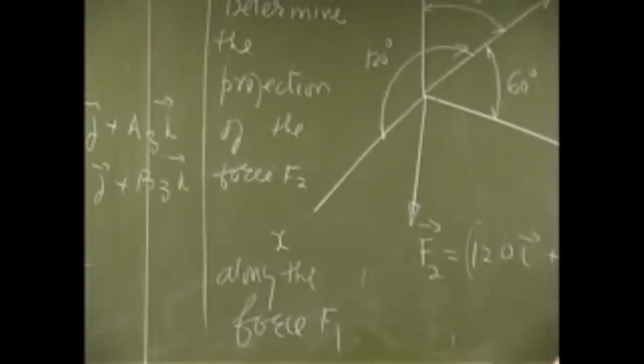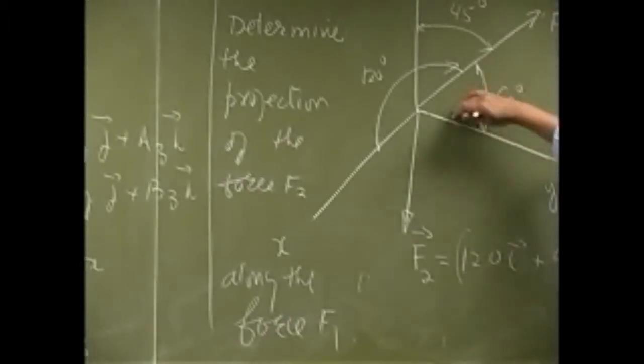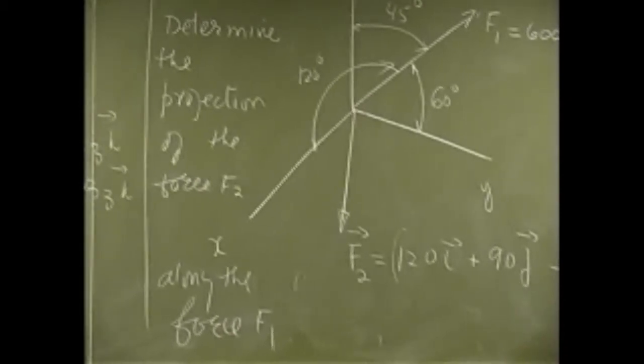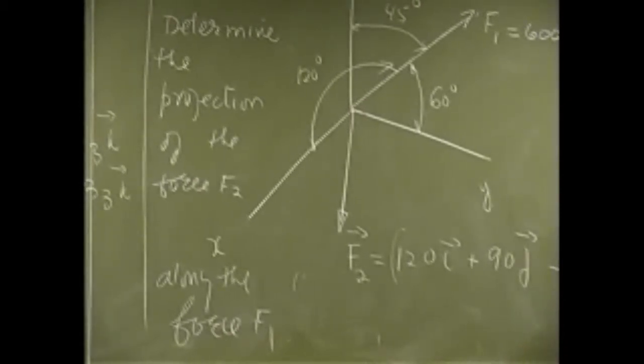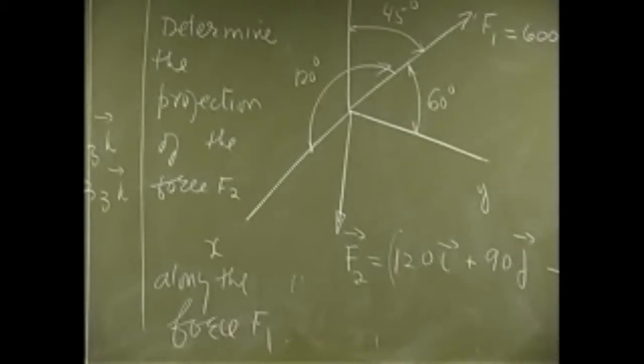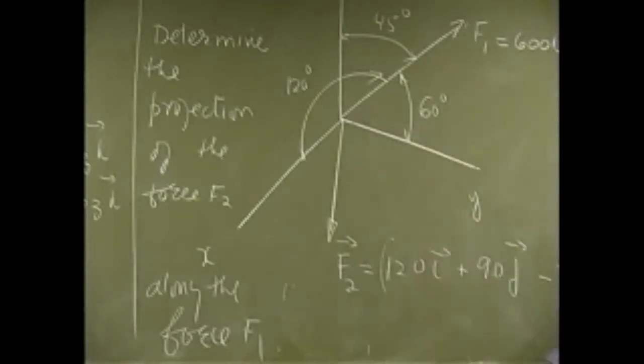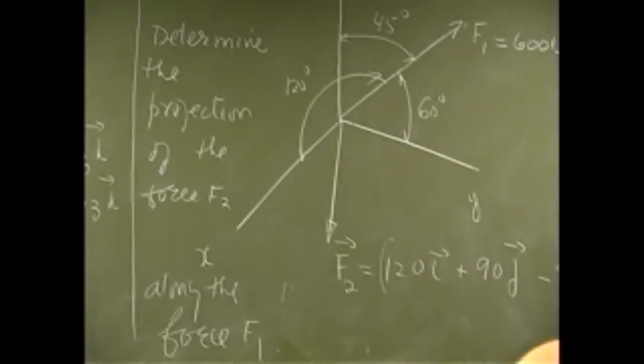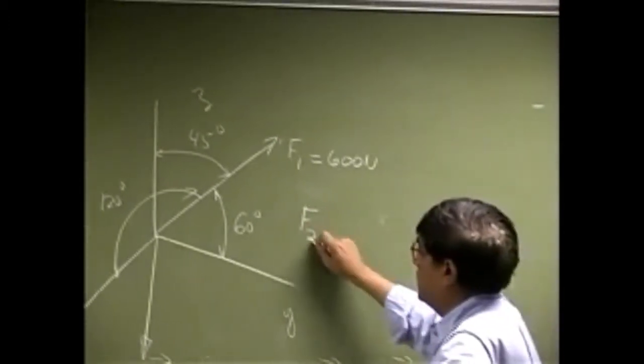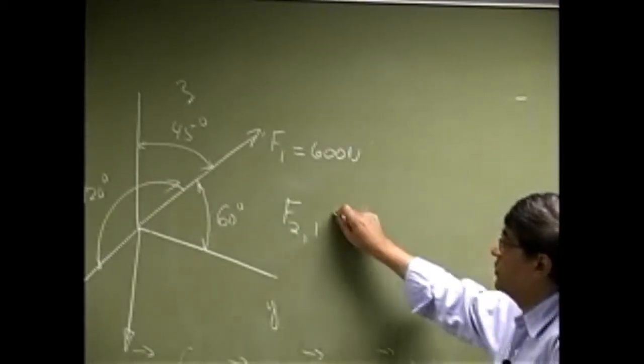So we want to find the projection of this force along this direction. When you say projection, you're also saying that you're looking for the component of this force along this direction. So we use the second equation, which means we want to find the component of force F2 along the force F1.